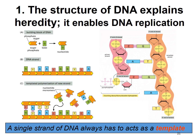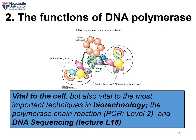Here is the take-home message. Number one: the structure of DNA explains heredity as it enables DNA replication through the semi-conservative model by complementary base pairing. Number two: DNA polymerase plays an important role in DNA replication, and these enzymes are also used in biotechnology in processes such as polymerase chain reaction and DNA sequencing. In your PowerPoint slide you will find a video that sums up everything pretty well, so feel free to take a look.